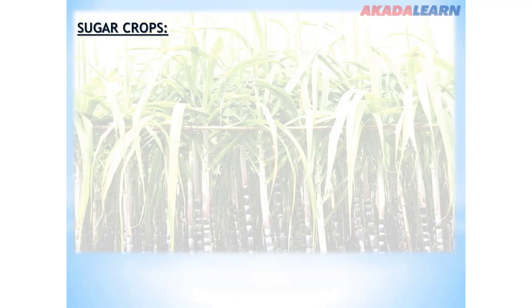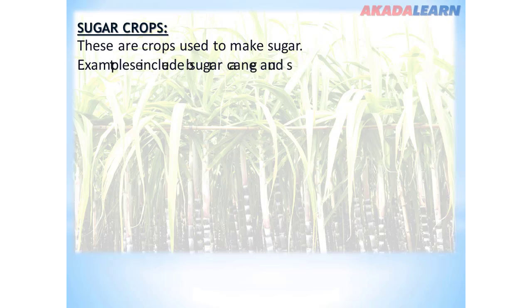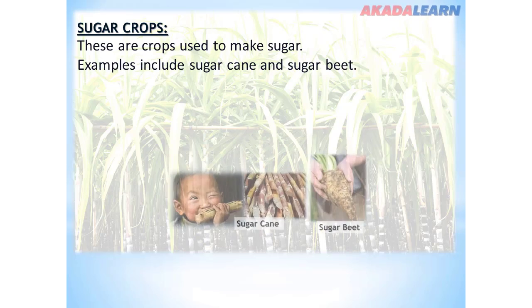The next one is sugar crops. Sugar crops are crops used to make sugar. Examples include sugarcane and sugar beets.